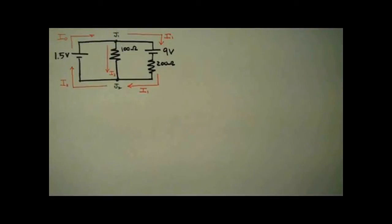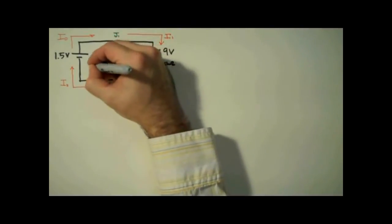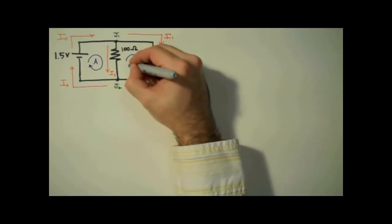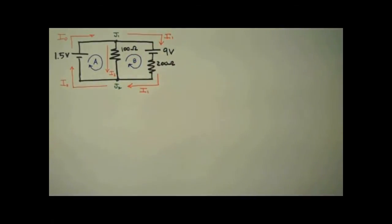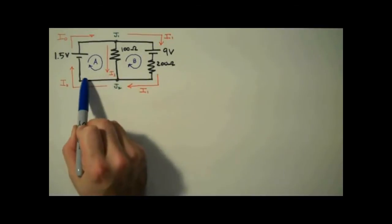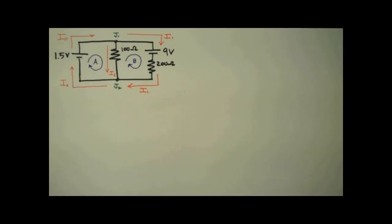Also note that the directions of these currents at this point are arbitrary. We'll find out if we chose the right directions after we complete the problem. Next, we label our loops. I'll label this loop A and this loop B. Just like the currents, the direction of your loops is arbitrary. You can label the outer perimeter loop C if you'd like.